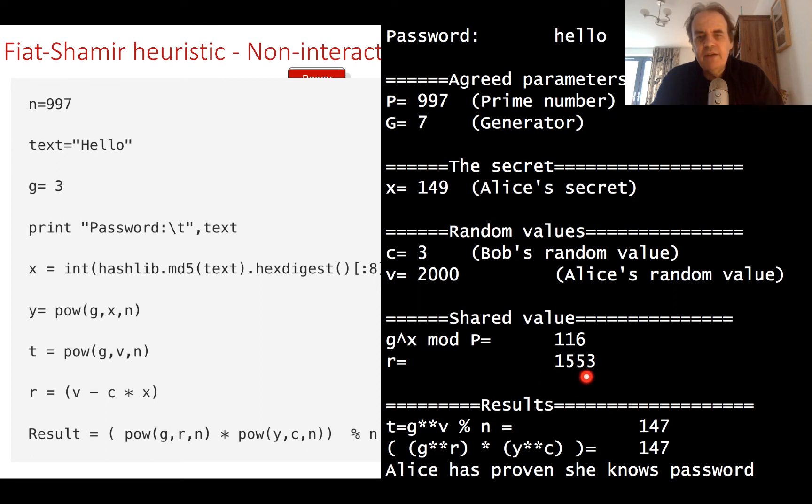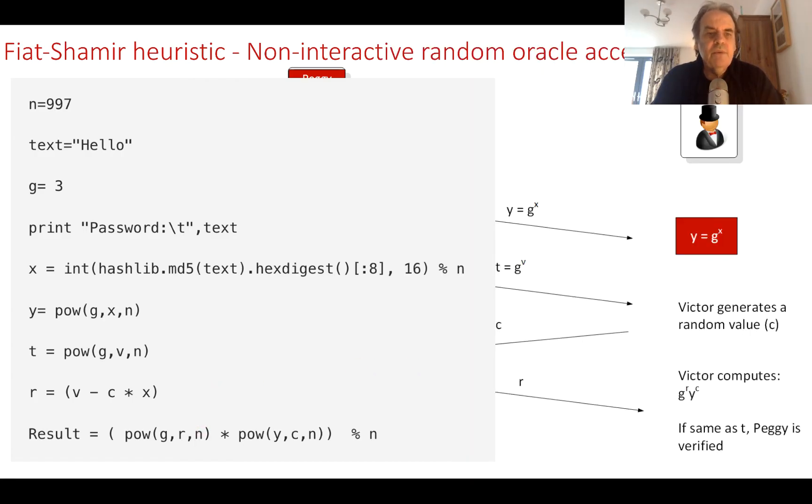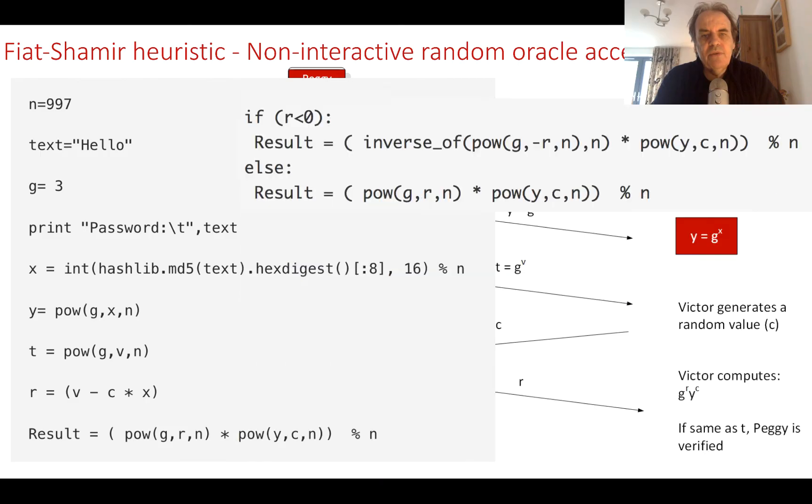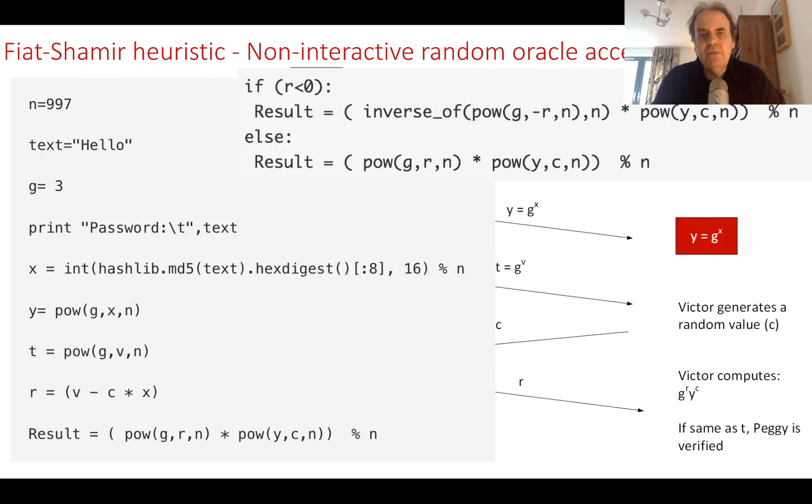The problem that we have is that this value could be negative because c times x could be greater than v. If that happens, this won't work because it's one divided by something to the power of something, which is going to give us a floating point which will break our integers. So the way we do this is to use the inverse mod of a value.